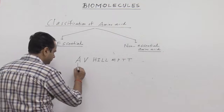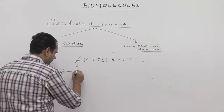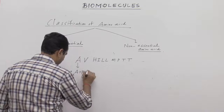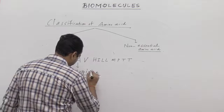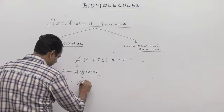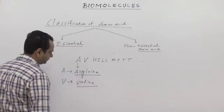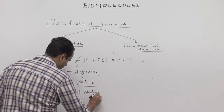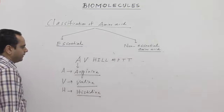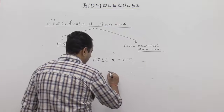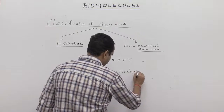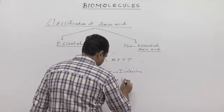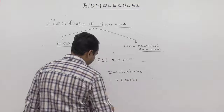A is arginine. V is valine. H is histidine. I is isoleucine. L is leucine. And the next L is lysine.